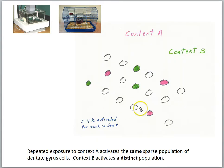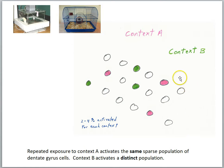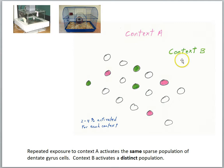Within the hippocampus, the dentate gyrus, for example, has a population of cells. Scientists have found that different contexts activate different sets of hippocampal cells. So context A might activate the pink cells, and context B would activate the green cells — a non-overlapping set of cells responding to different contexts.